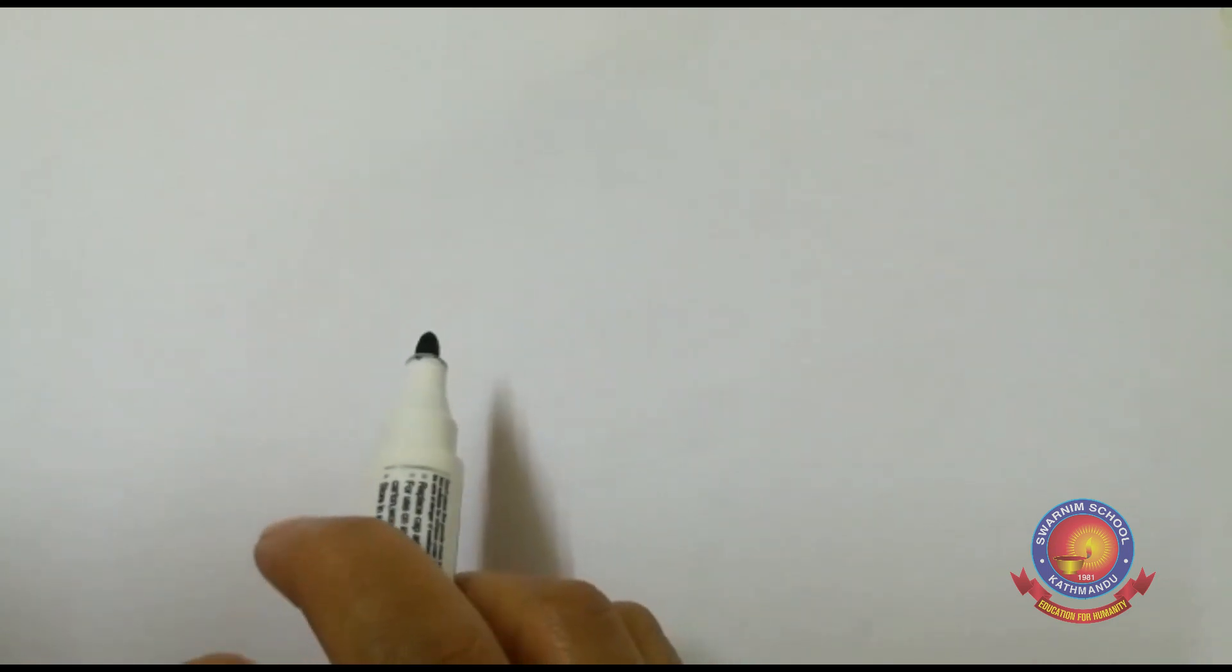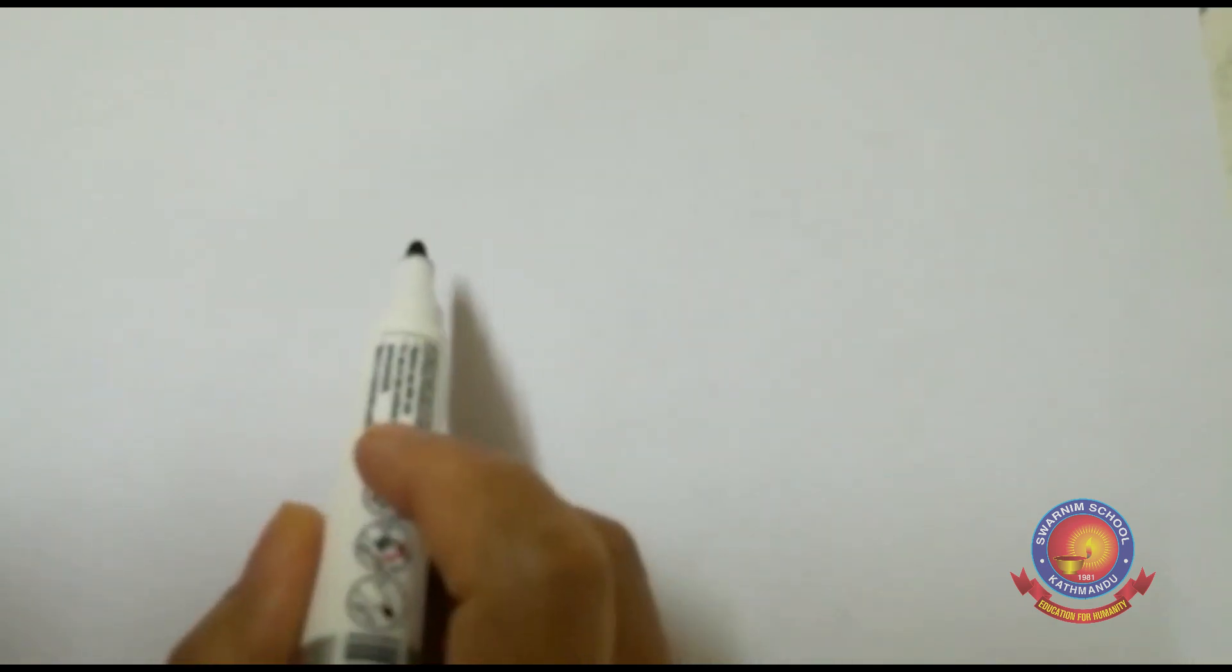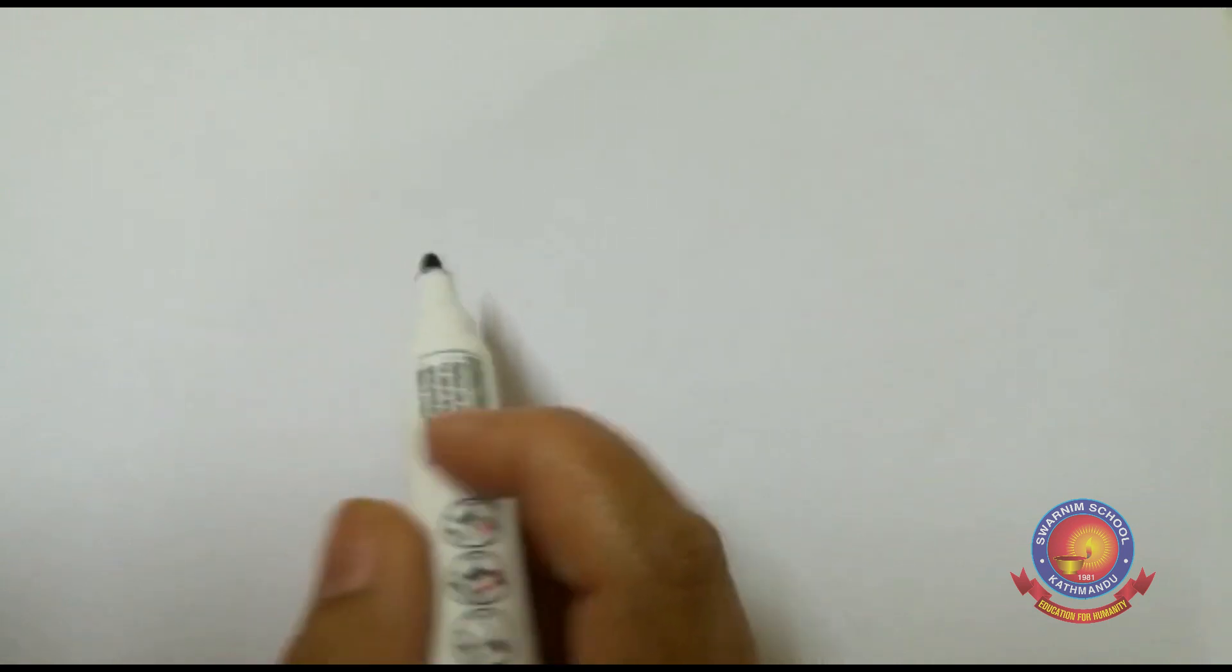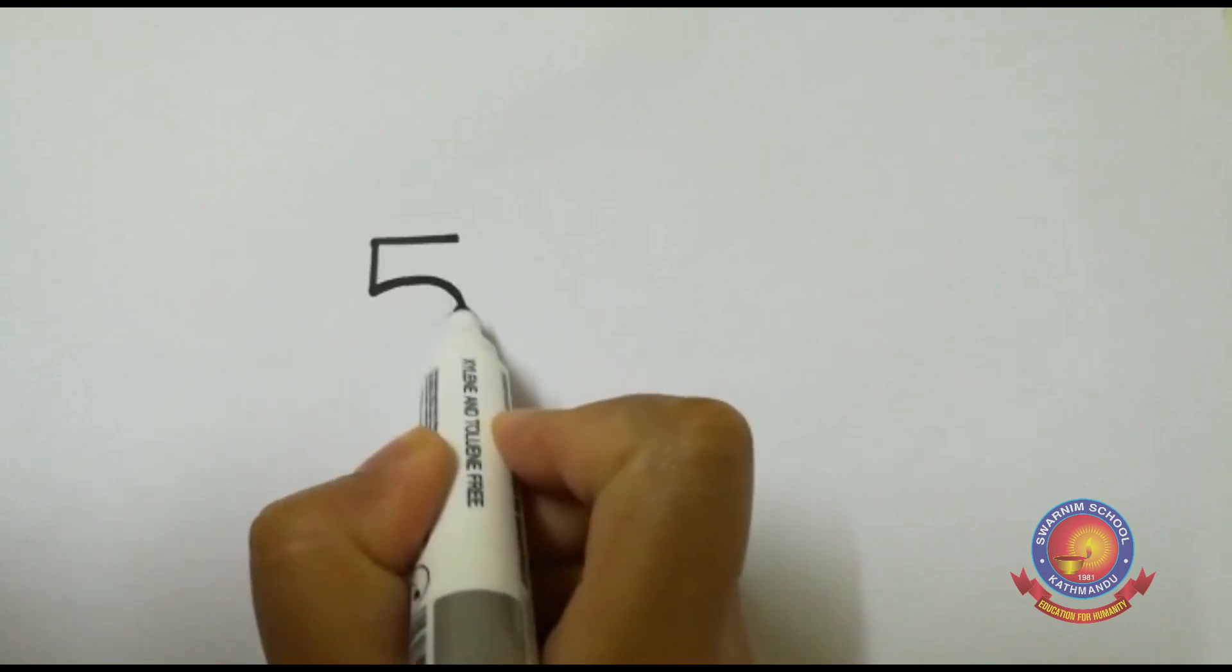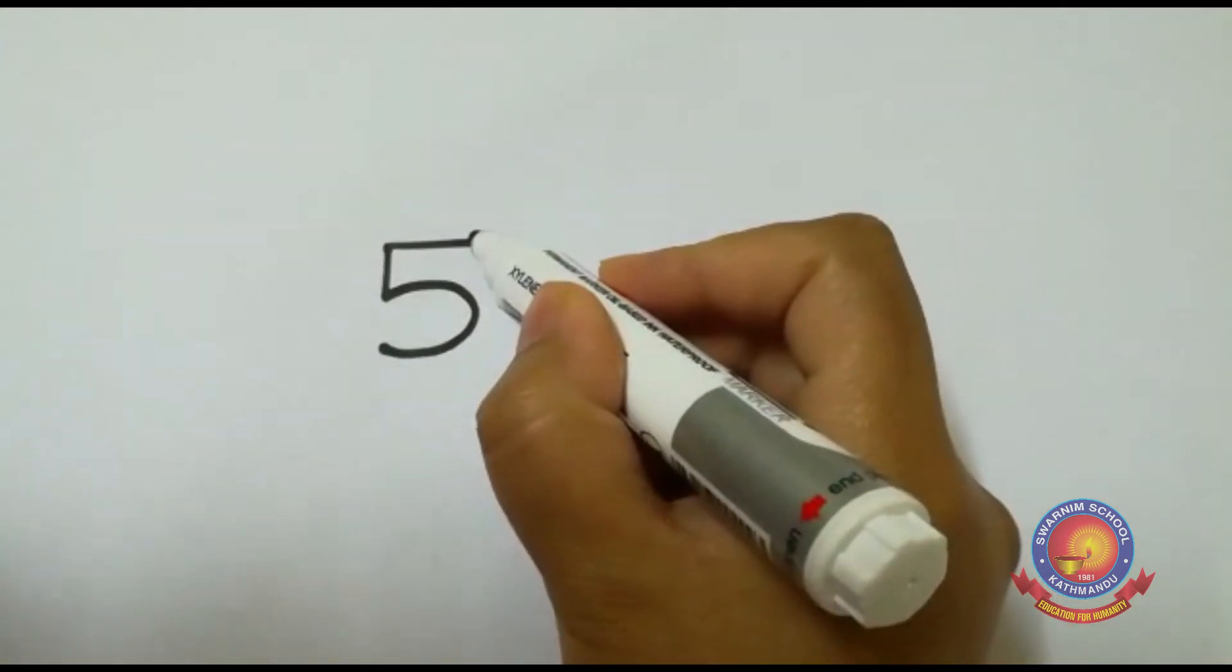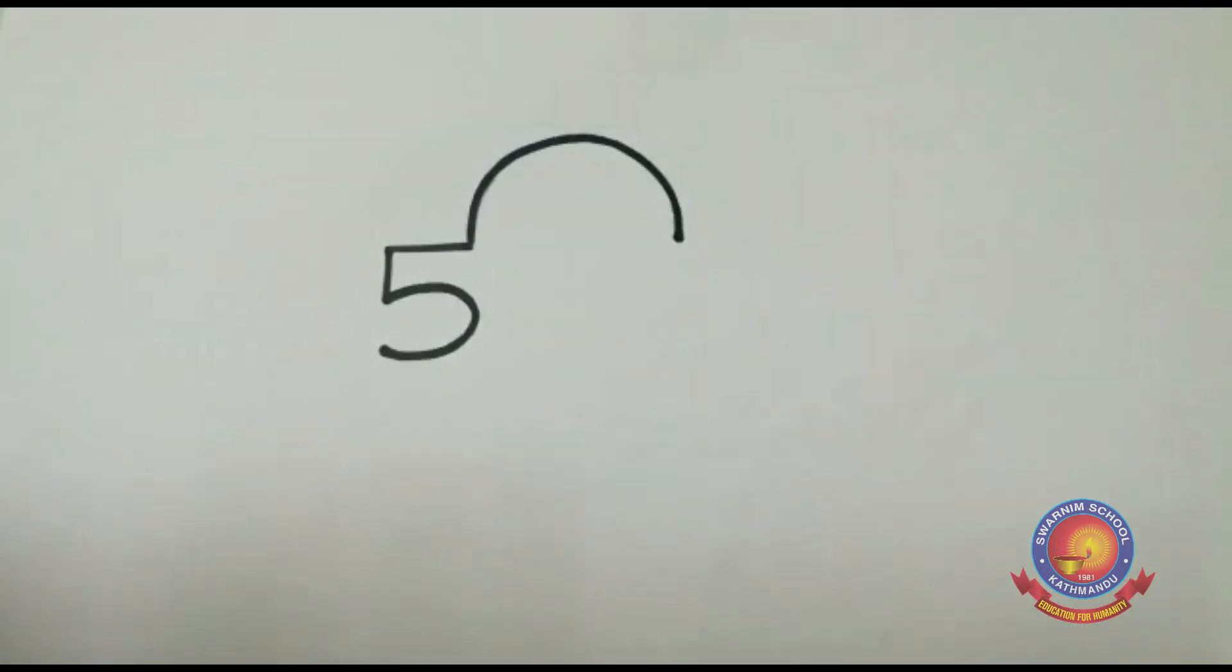You all know how to write number 5, yes? I know that. Very good. Let's write number 5 almost in the middle of your paper but not too big, medium size. Yes, you know how to write number 5. After that, you make opposite U from this line. Write number 5 and then write opposite U from here.